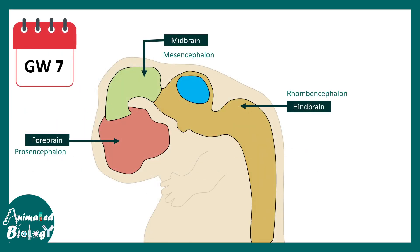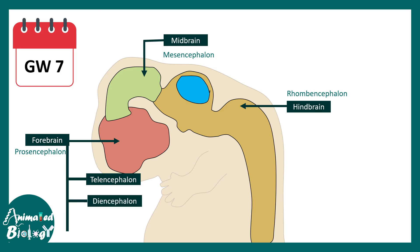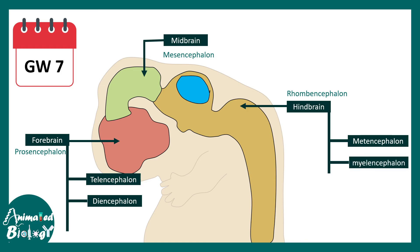At around gestational week 7, there would be further subdivision of these regions. For example, the prosencephalon gives rise to the telencephalon and diencephalon, and the rhombencephalon gives rise to the metencephalon and myelencephalon. Now we can understand that a more complicated and intricate architecture is building up as time progresses.